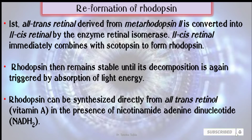For reformation of rhodopsin: first, all-trans retinol derived from metarhodopsin II is converted into 11-cis retinol by the enzyme retinal isomerase. Then 11-cis retinol immediately combines with scotopsin to form rhodopsin. Rhodopsin remains stable until its decomposition is again triggered by absorption of light energy. Rhodopsin can also be synthesized directly from all-trans retinol, which is called vitamin A, in the presence of nicotinamide adenine dinucleotide.